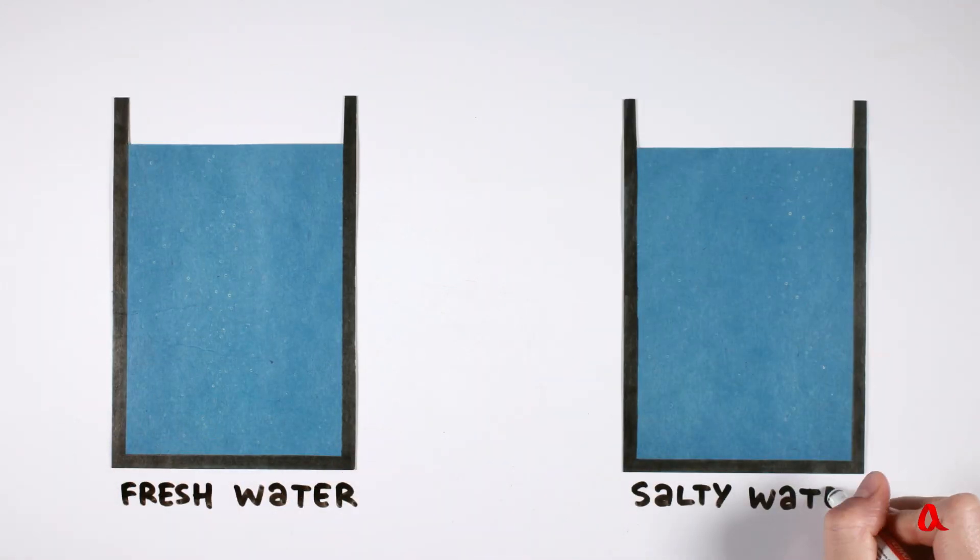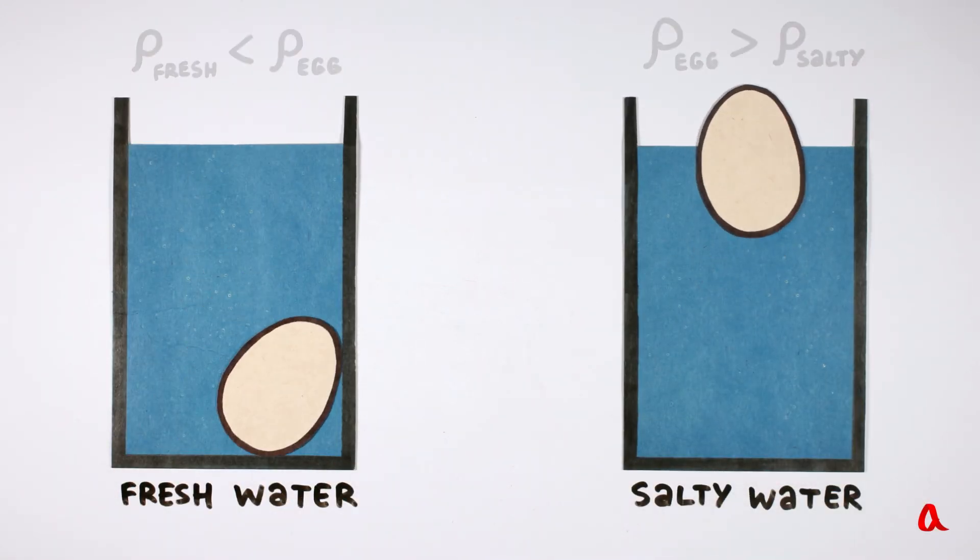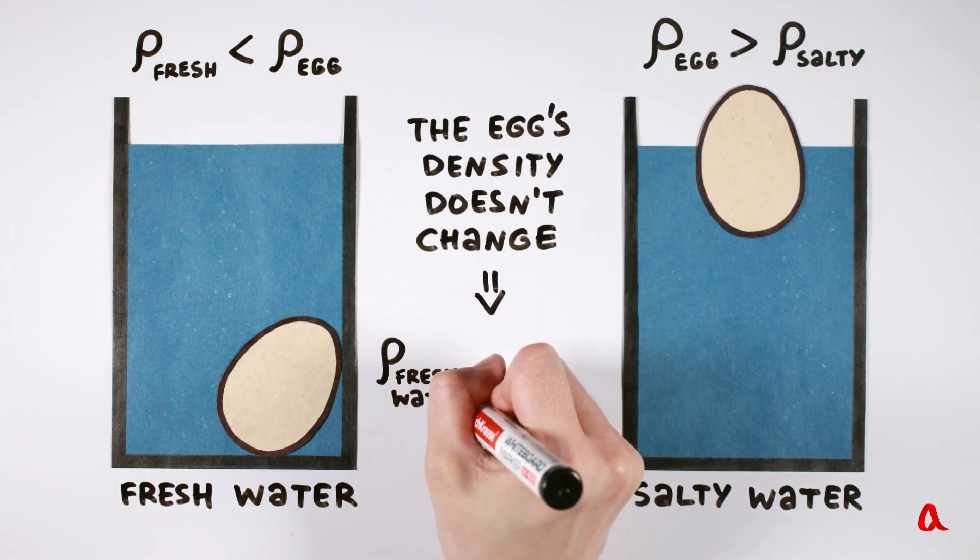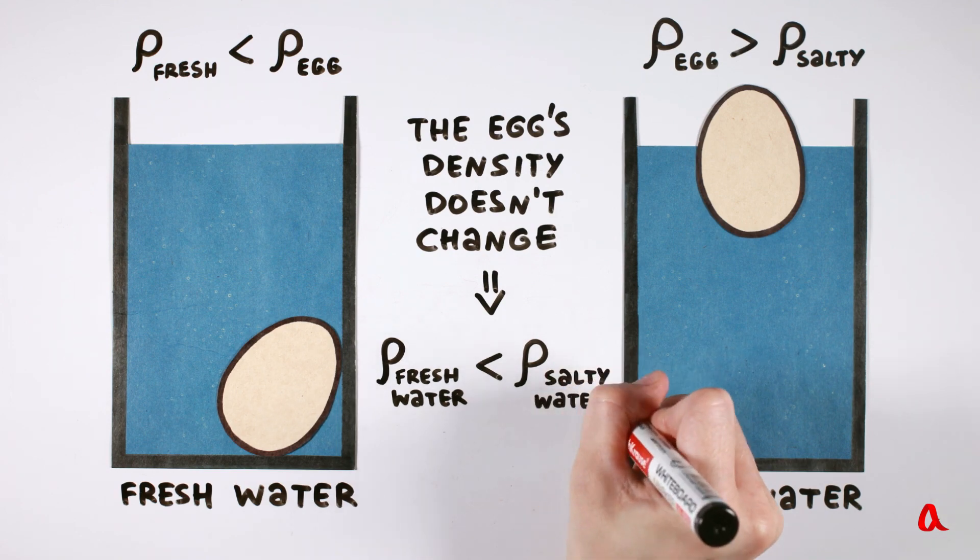An egg sinks in fresh water, but it floats in salty water. The egg's density doesn't change. This means that when salt dissolves in water, the density of the water increases, so the egg surfaces.